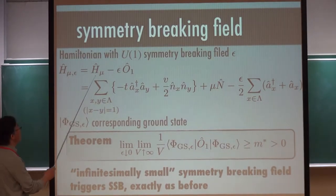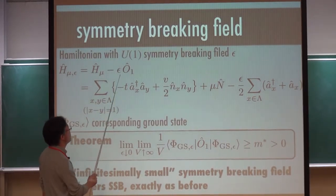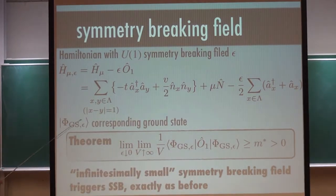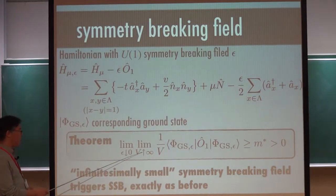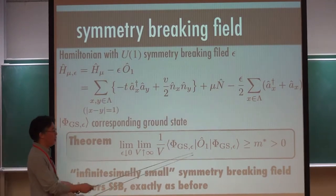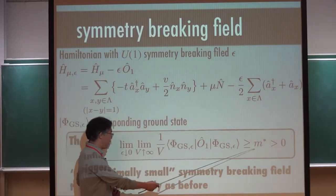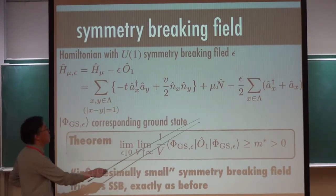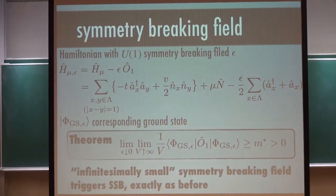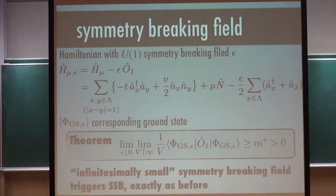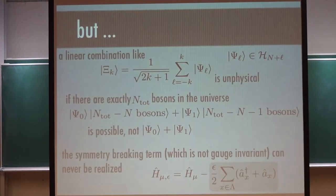If you add to this Hamiltonian a symmetry-breaking field — this very small epsilon term — then looking at the corresponding ground state in the limit where the infinite volume limit is taken first and epsilon goes to zero after, the expectation value of O1 is non-vanishing. So an infinitesimally small symmetry-breaking field triggers spontaneous symmetry breaking, exactly as in the Ising model or the Heisenberg antiferromagnet.